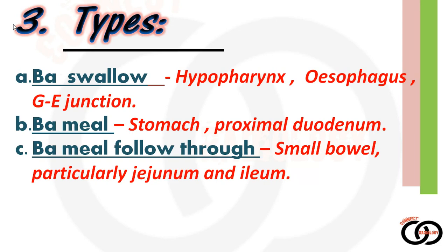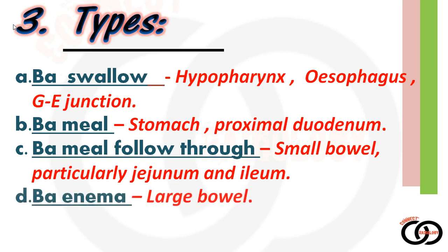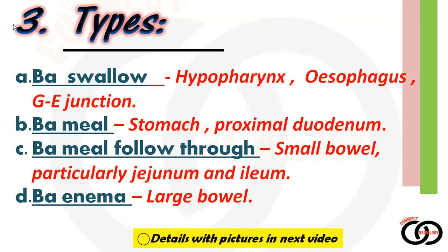With the barium follow-through we are able to see the small intestine, particularly the jejunum and the ileum. The jejunum is identified by the complete ring-like folds, while the ileum lacks these features. The fourth type is barium enema — here we give 25% weight by volume barium sulfate through the anus and take timely x-rays, making us able to see the large bowel, that is the colon. We will discuss these types in more detail in the next video.